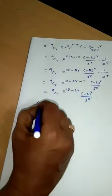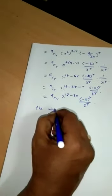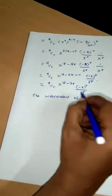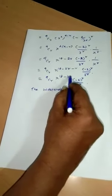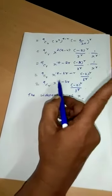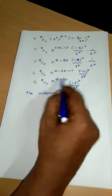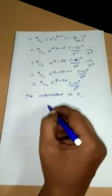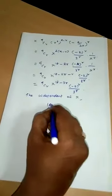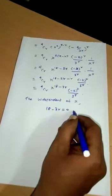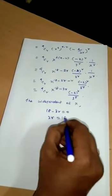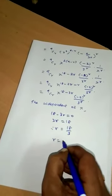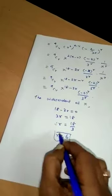The term independent of x means the power of x is zero, i.e., x^0 = 1, so we can eliminate x. Setting 18 - 3r = 0 gives 3r = 18, therefore r = 18/3 = 6. So r equals 6.